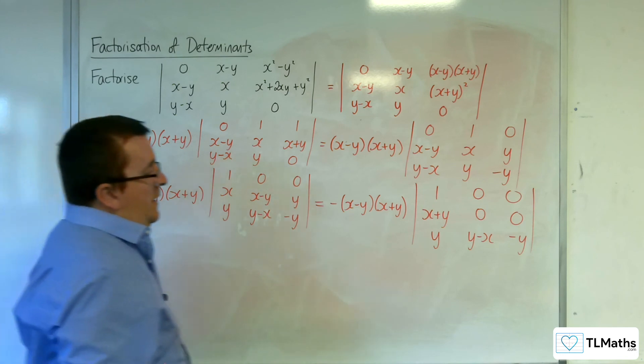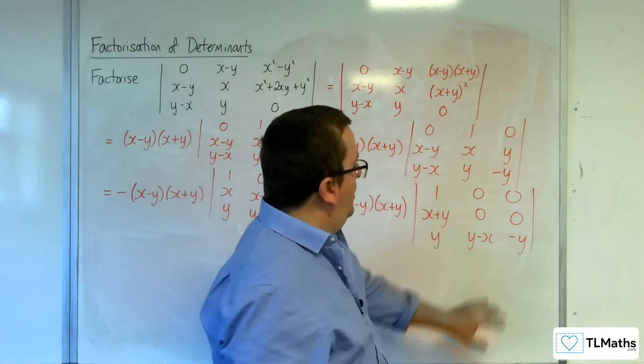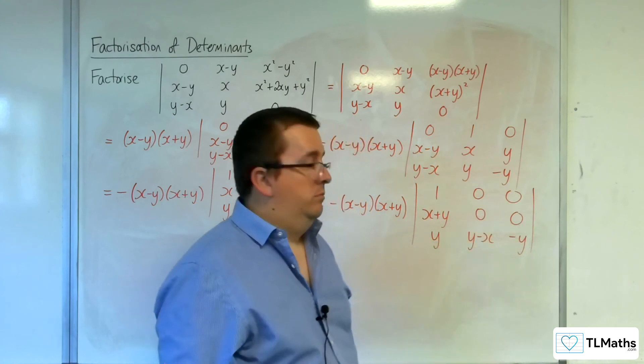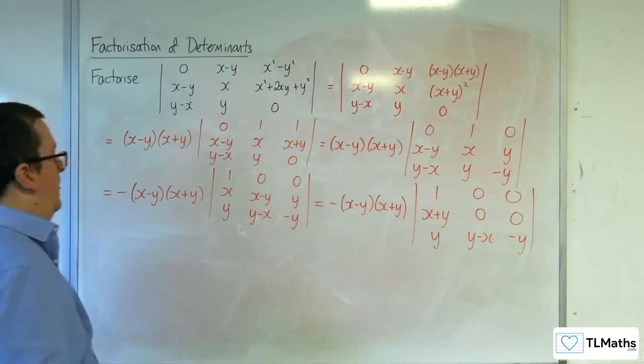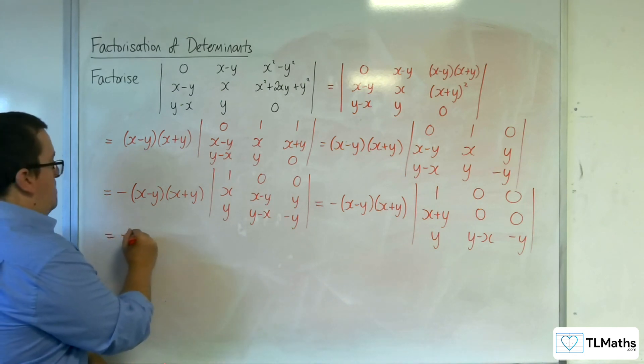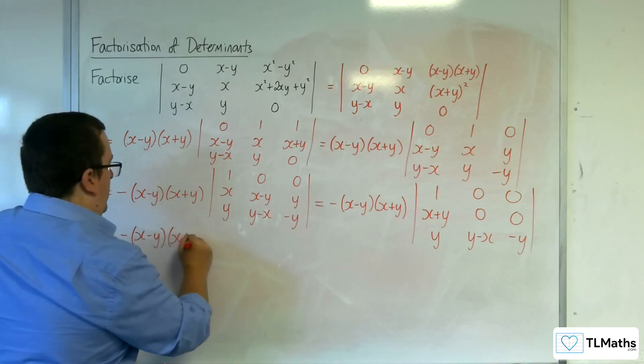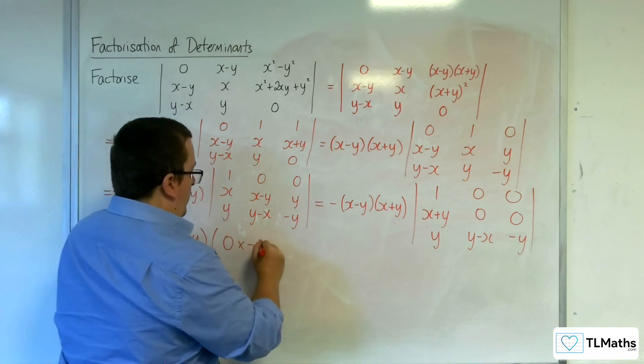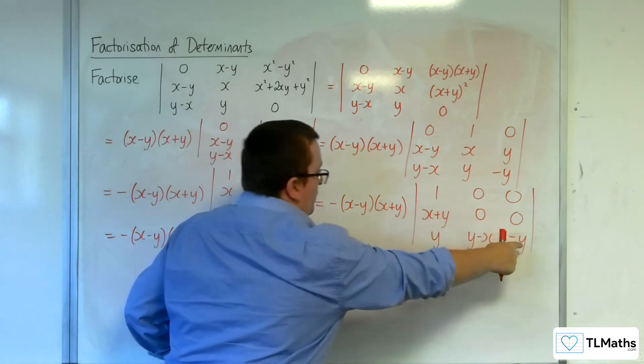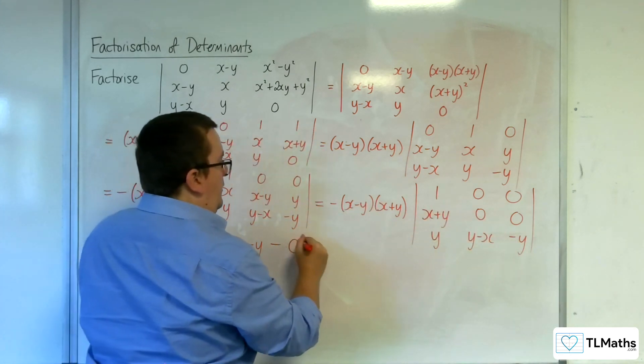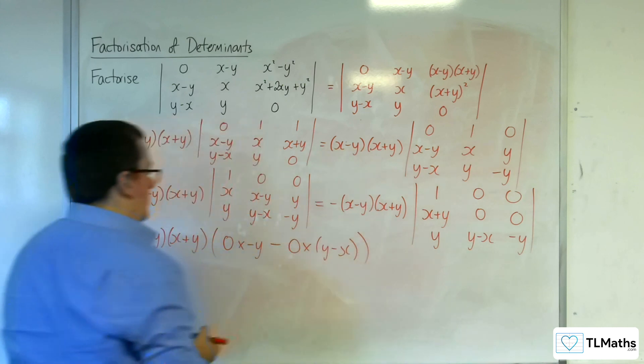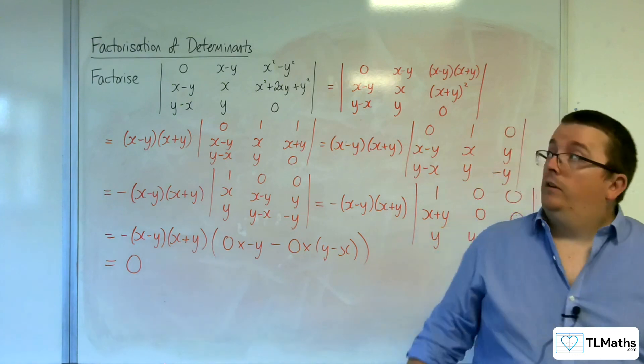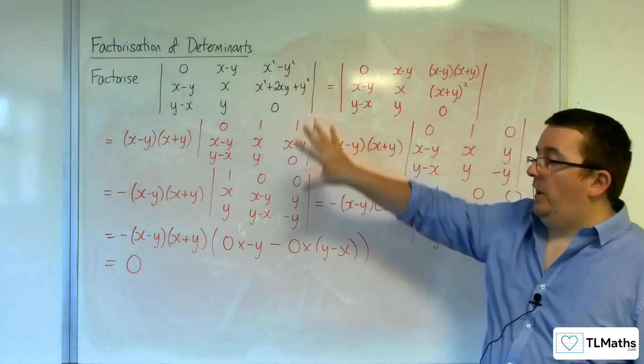So now, if you're going to find the determinant of this matrix, you're going to have 1 times the determinant of this matrix, which is just going to be 0 take away 0. So the whole thing is 0. So we've got is equal to minus (x-y)(x+y) times by 0 times minus y, take away 0 times (y-x), which is 0. So the determinant of that original matrix was actually 0.